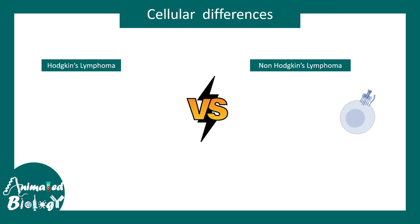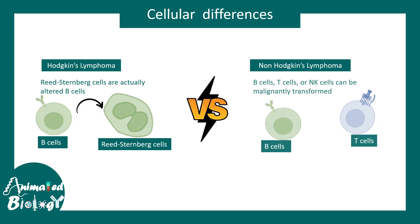Cellular differences include the cell composition. Non-Hodgkin's lymphoma could be due to T cell, B cell, plasma cells, or NK cells. Whereas Hodgkin's lymphoma is generally derived from B cell — specifically an oncogenically transformed B cell, which is essentially the Reed-Steinberg's cell.